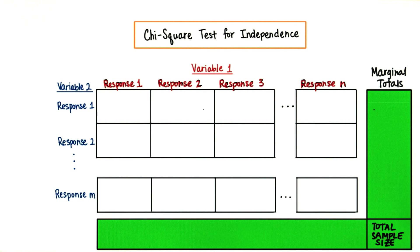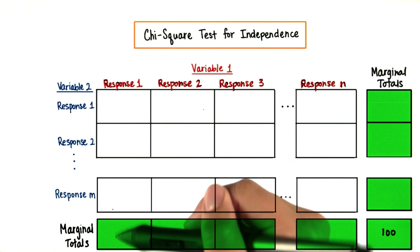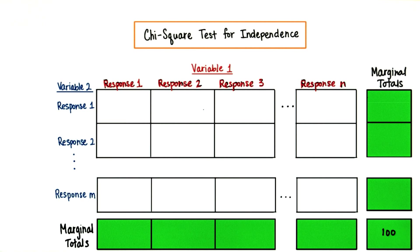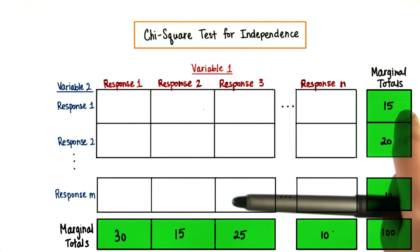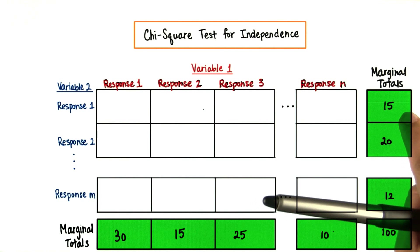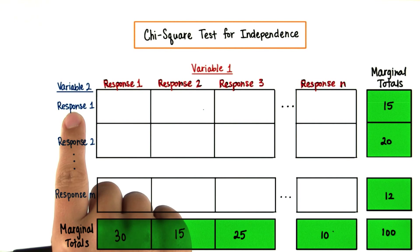Let's just assign some random numbers here. We have an m by n contingency table, and let's say the total number of subjects in the sample was 100. We would expect that 15 out of 100 of our subjects would have response 1, variable 2.